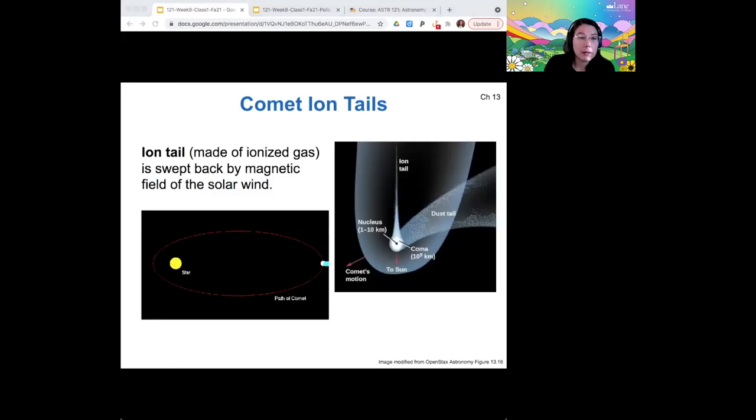If the ion tail is pointing away from the sun, then you can always tell where the comet will be orbiting because it should be almost perpendicular to that ion tail at all times.